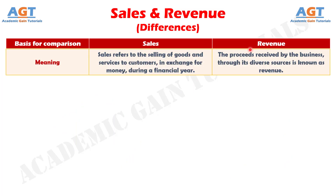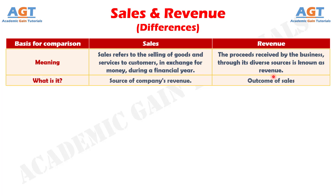Difference Number 1: Sales refers to the selling of goods and services to customers in exchange for money during a financial year, whereas the proceeds received by the business through its diverse sources is known as revenue. Number 2: While sales are one of the major sources of a company's revenue, revenue is the outcome of sales.